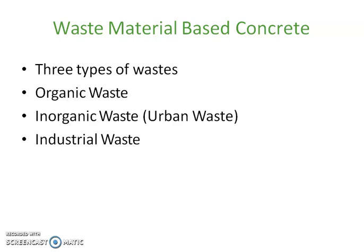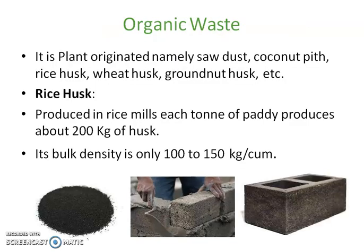Some of the types of waste are organic waste, inorganic, and industrial waste. Inorganic waste includes urban waste, that is construction demolition waste. Some of the organic wastes are rice husk, wheat husk, groundnut husk, sawdust, and coconut pith. We will see each and every one in detail.